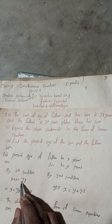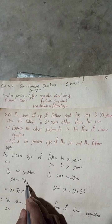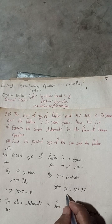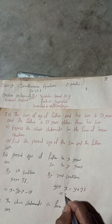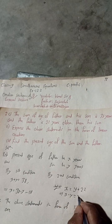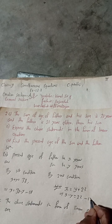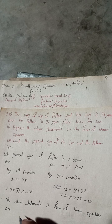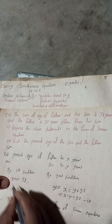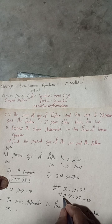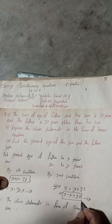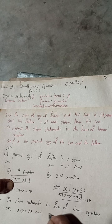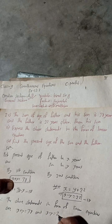Therefore the above statements in the form of linear equations are: equation 1 — x plus y equals 38, and equation 2 — x minus y equals 22. This is the standard form. You can also understand it this way: the father is 22 years older, meaning the difference of their ages is 22.